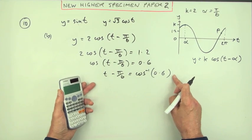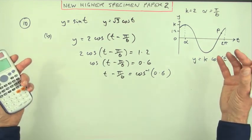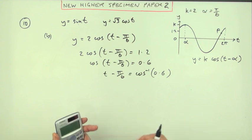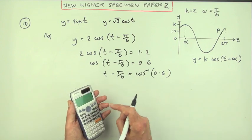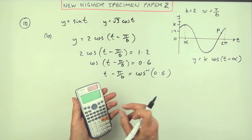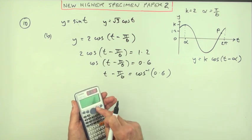Cos of t minus pi upon 6 is 1.2 divided by 2, so that's 0.6. t minus pi upon 6 will be inverse cos of 0.6. Now you can either do this in radians or degrees. You can do it in degrees if you like, but as long as you change it into radians afterwards, because the answer has to be in radians. You may as well just do it in radians anyway. There's nothing to be scared of. Just put your calculator into radian mode and it will just give you the numbers you actually need.